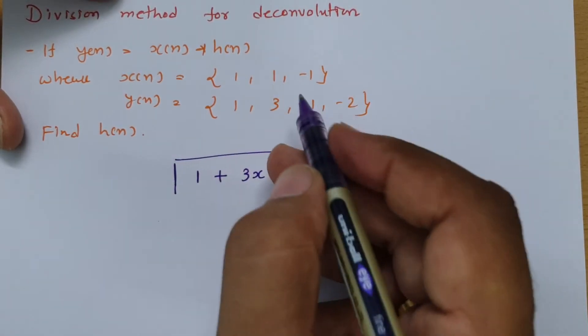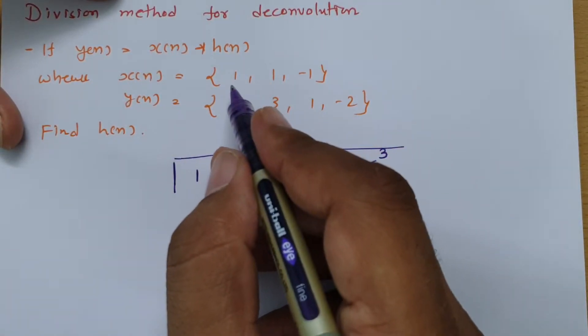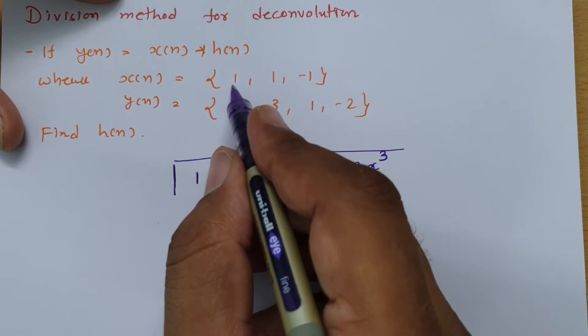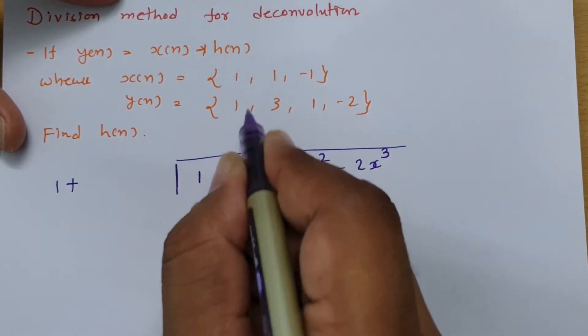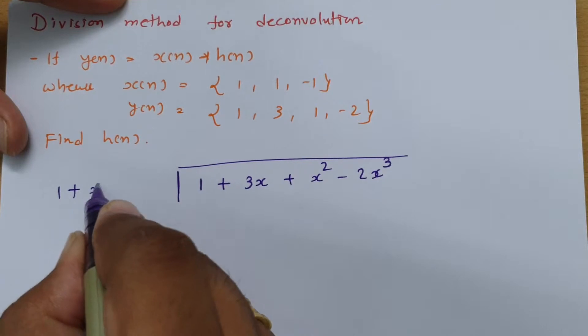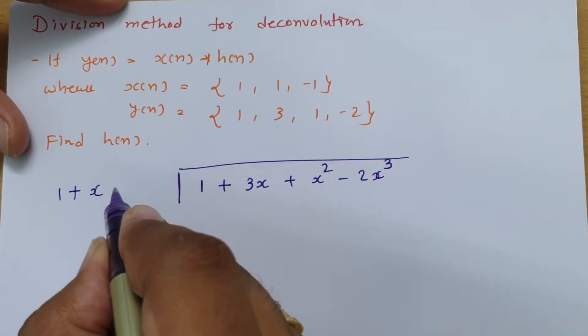Now see how I write x(n) here. x(n) is written as 1 + x - x².